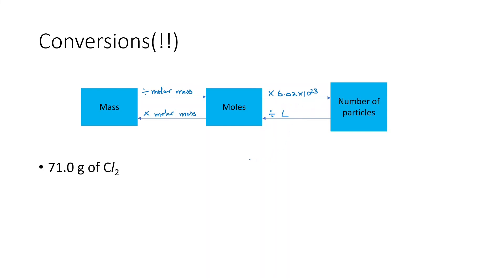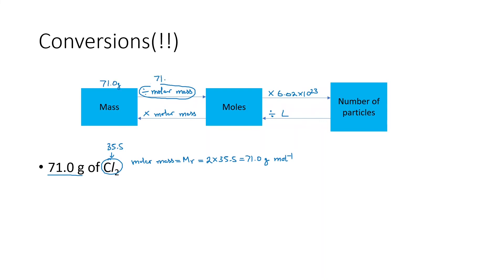Quick example: 71 grams of Cl2. Cl2 is a molecule, so its molar mass is the molecular mass of chlorine. The Ar of chlorine is 35.5, so 2 × 35.5 = 71.0 grams per mole. To convert 71 grams to moles, divide 71 by 71 — we get 1 mole. And to convert to number of molecules, multiply by Avogadro's number, giving 6.02 × 10²³ Cl2 molecules.